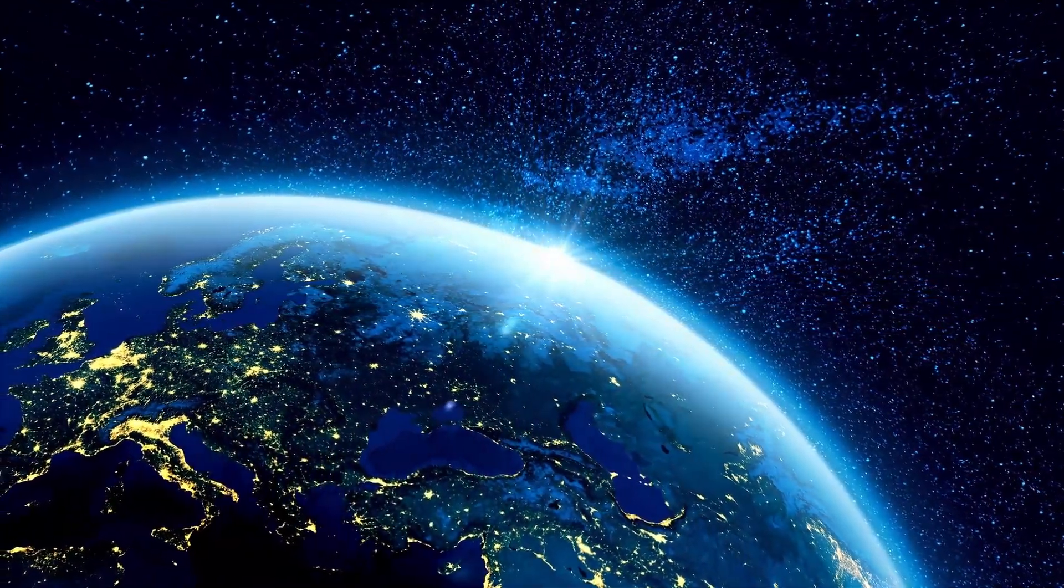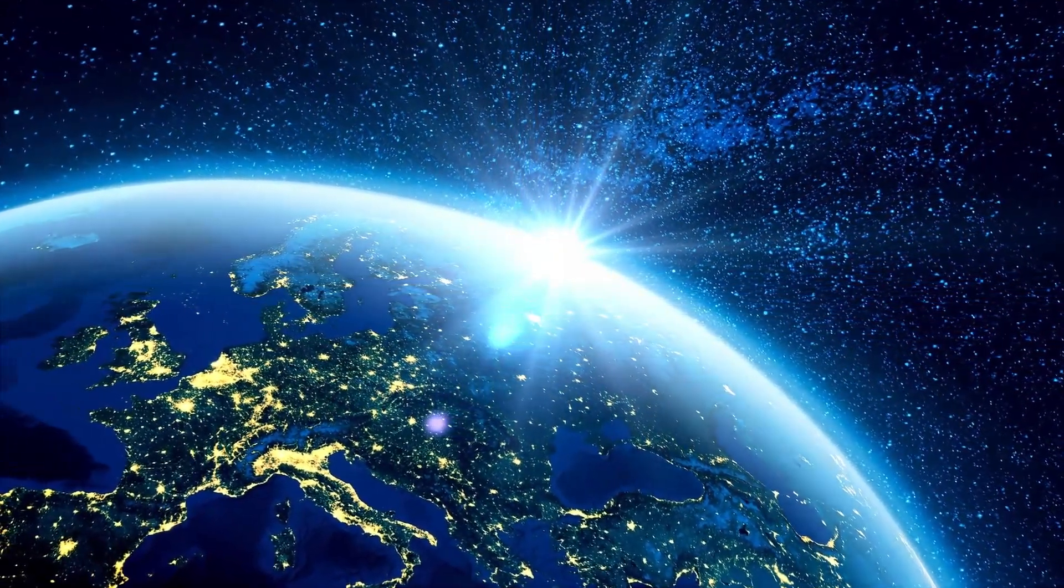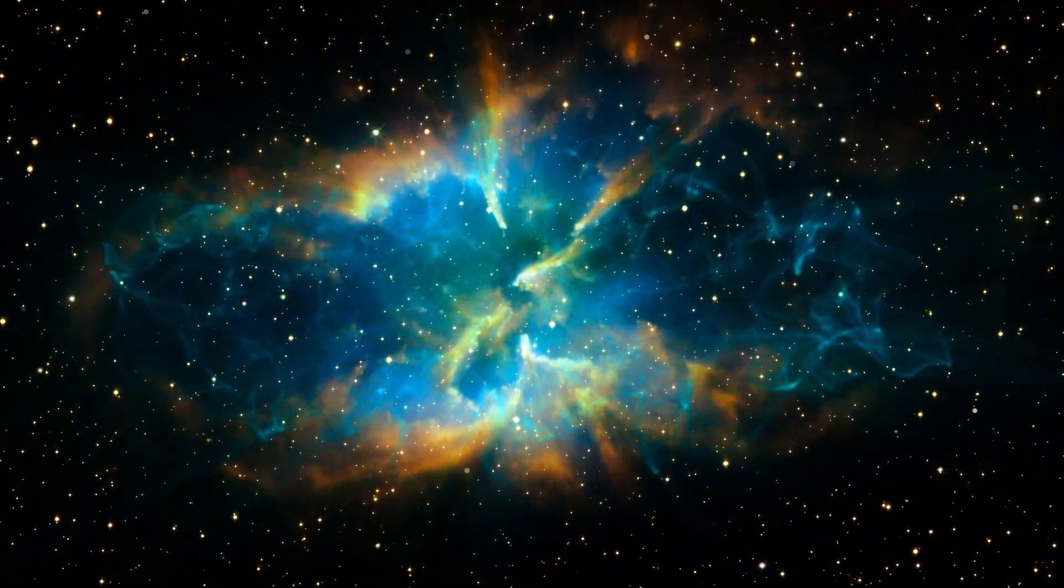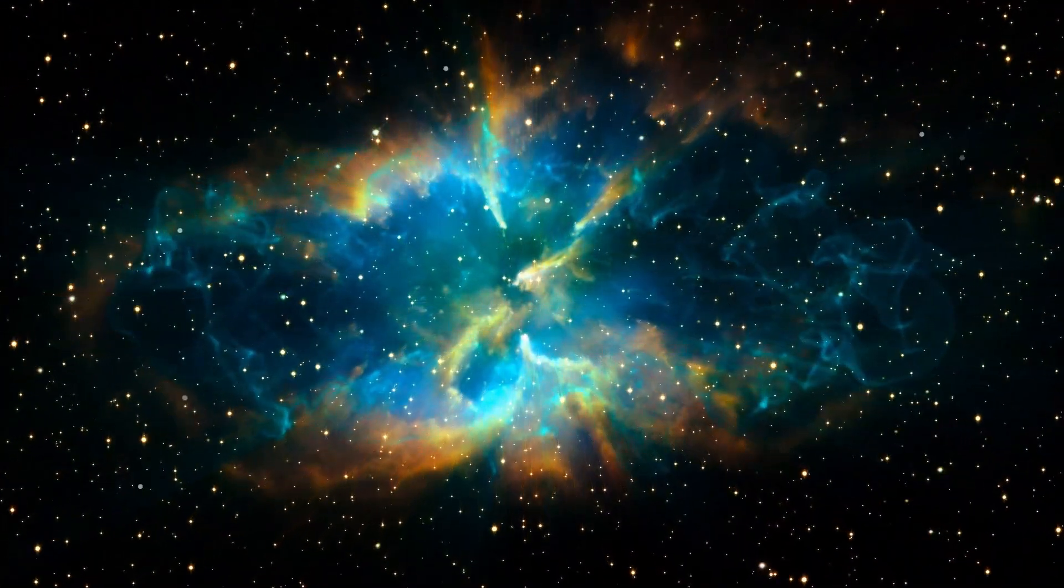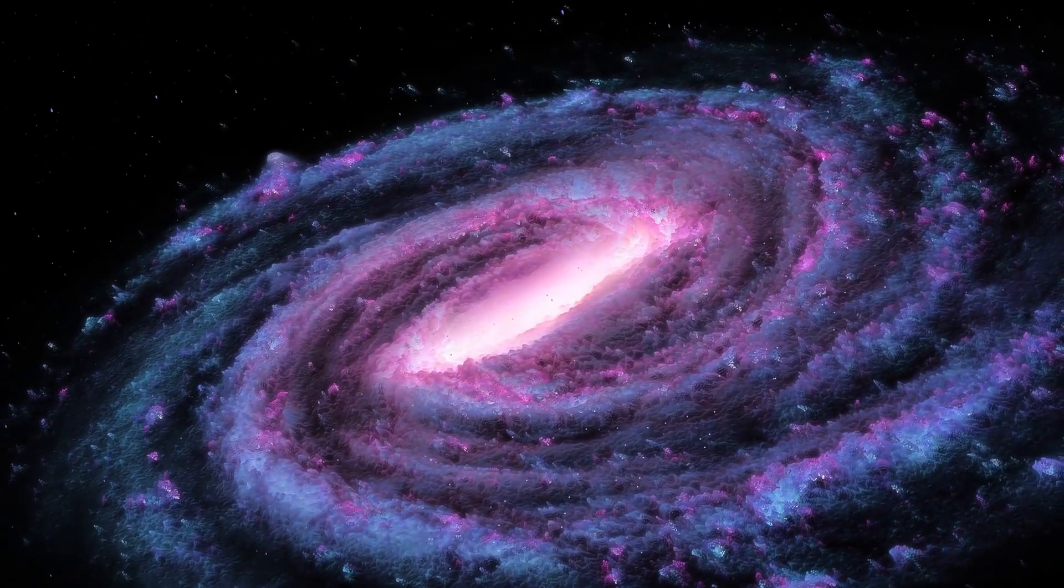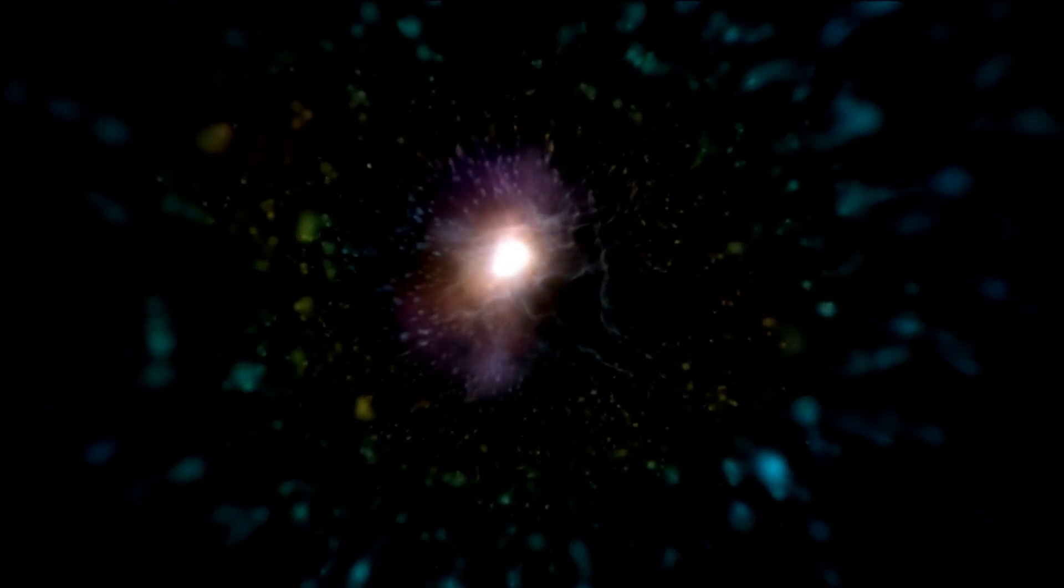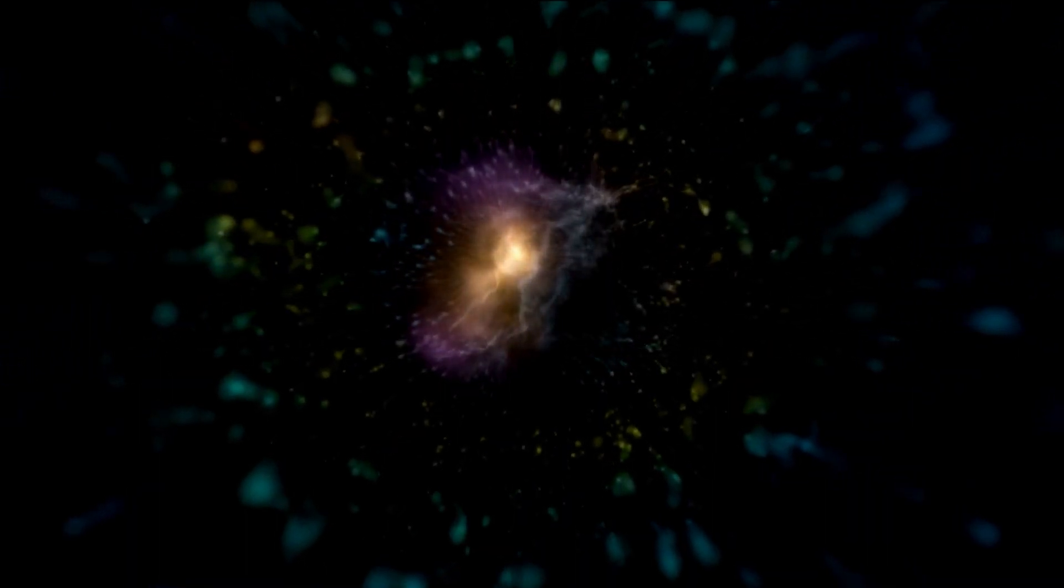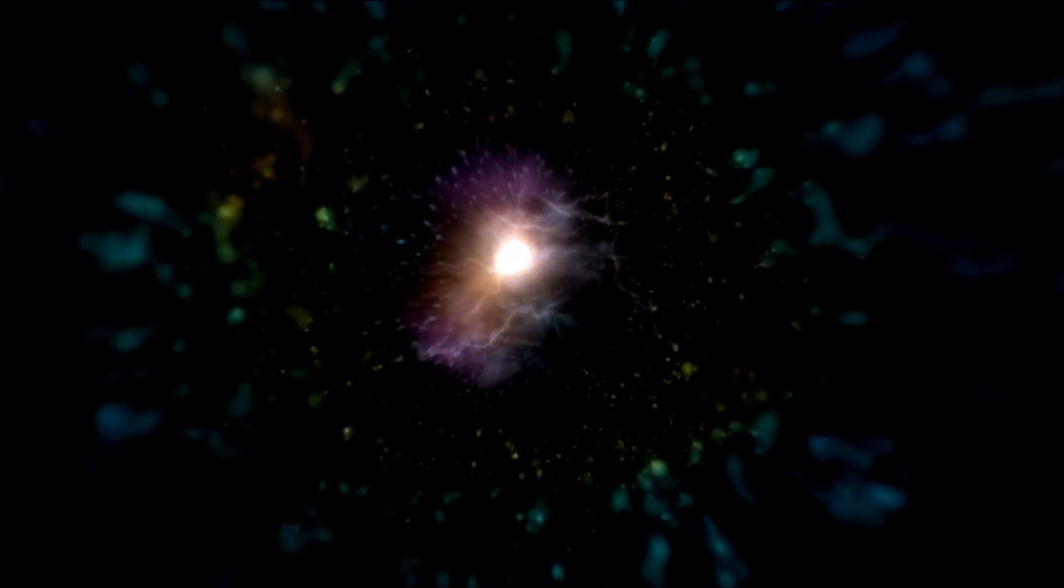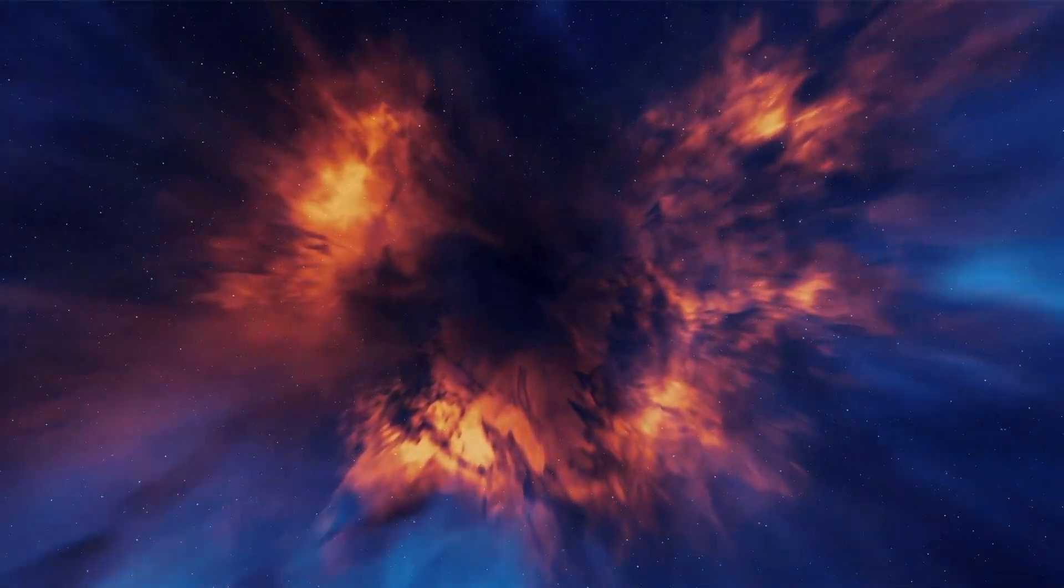A researcher from the University of Cambridge has commented on the implications of these discoveries, noting that while K2-18b is indeed located within a habitable zone and contains carbon compounds, this does not necessarily mean that the planet can support life. The planet's size, with a radius 2.6 times that of Earth, suggests that its core is likely surrounded by a massive, high-pressure mantle of ice, similar to Neptune's structure. This indicates that while K2-18b may have a thinner hydrogen-rich atmosphere and an ocean-covered surface, the conditions inside these oceans may be too extreme or unsuitable for life as we know it.